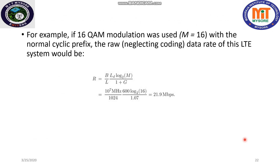As a simple calculation: if we use 16-QAM modulation before applying to the IFFT, what is the data rate for this 10 MHz channel? With L_d = 600 sub-carriers, M = 16-QAM, and (1 + G) where G = 0.07, the calculated data rate is 21.9 Mbps. That is the data rate achievable with an LTE system using a 10 MHz channel.